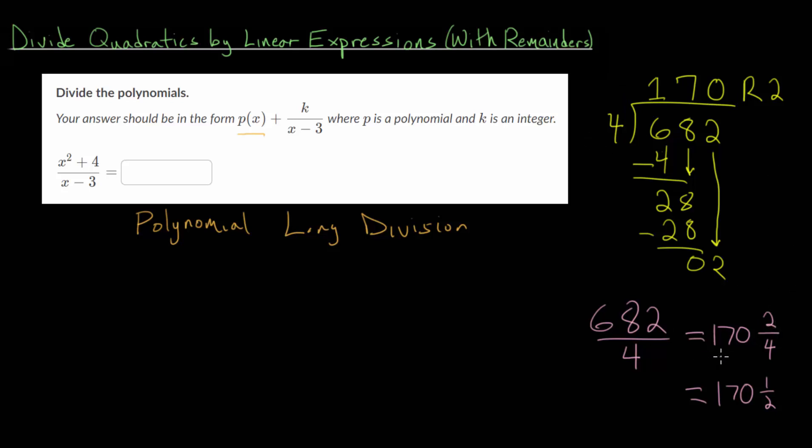You can check this by re-multiplying this number by 4. If we take 170 and 2 fourths and multiply by 4, we should get back 682. We're taking this equation and multiplying both sides by 4. 170 times 4: 4 times 100 is 400, and 4 times 70 is 280. Add 400 and 280 to get 680. Then 4 multiplied by 2 fourths, the 4s cancel and you get 2. So 680 plus 2 is 682. That's a way to check your work, and this idea will also work with polynomial long division.